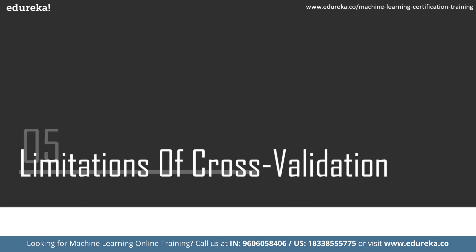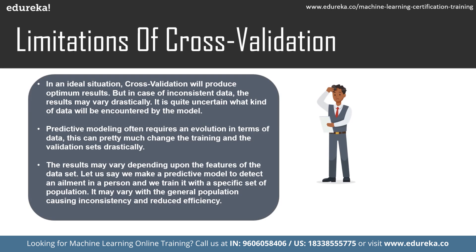There are a few limitations with cross validation. In an ideal situation it produces optimum results, but with inconsistent data the results may vary drastically. It is uncertain what kind of data the model will encounter. Predictive modeling often requires evolution in terms of data, which can drastically change the training and validation sets. Results may also vary depending on the features of the data set — for example, a model trained to detect an ailment in a specific population may show inconsistency and reduced efficiency with the general population.